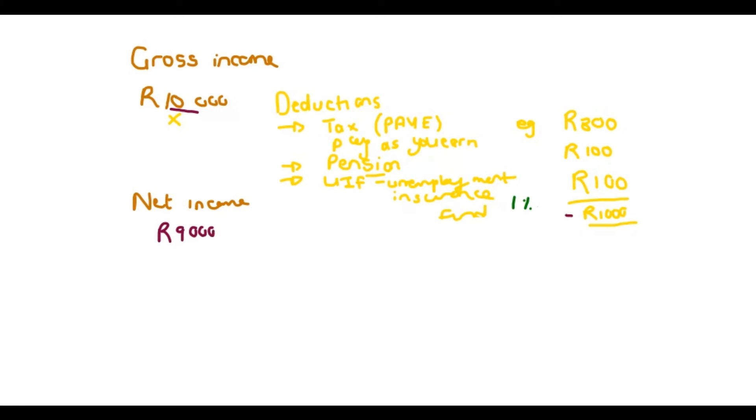So gross income, to summarize, is your income before anything is deducted. This is a very big number, before deductions. And then net income would be your income after deductions. And note that this is also often referred to as take-home pay. This is just the other name for it, take-home pay.